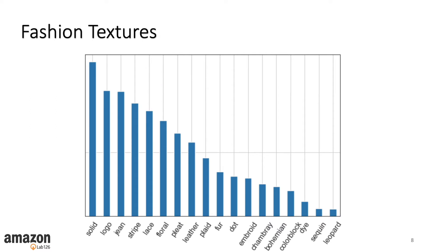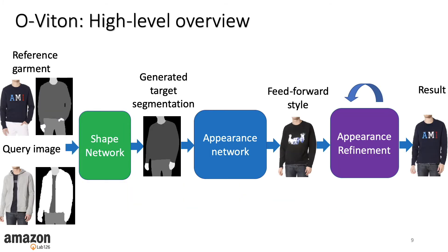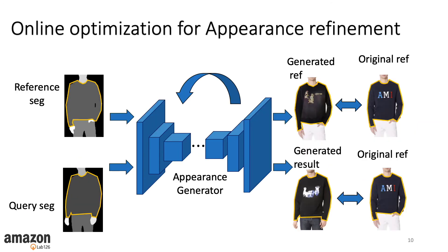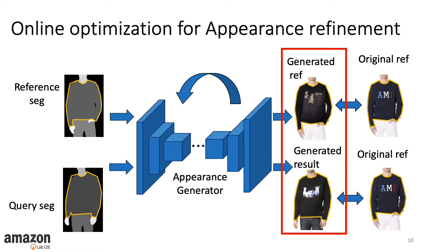This is the texture distribution in our training set. Complicated textures are less common, and some categories like logos are general and include a large variety of patterns. This challenges the appearance network learning process. We mitigate this by fine-tuning the network. In order to improve the output of the feed-forward appearance network, we perform a fine-tune step during the test phase. In each iteration, we produce a more accurate rendering of the reference garment while generalizing to the query image.